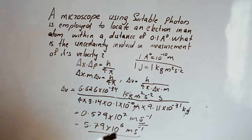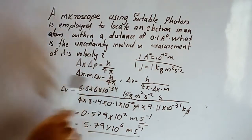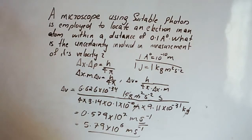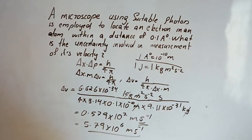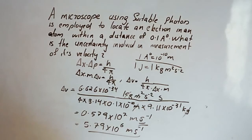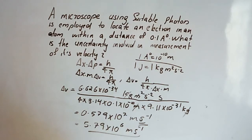Computing the exponents: 10 raise to plus 41 minus 34 gives 10 raise to 7. The final answer is 5.79 into 10 raise to 6 meters per second. This is the uncertainty in velocity. Remember the important values: Planck's constant and electron mass. Thank you.